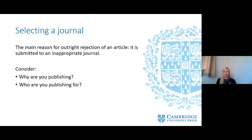First of all, selecting a journal. The top reason that editors give for an outright rejection of an article is that it is submitted to the wrong journal. Choosing the right journal for your research can seem daunting, but it doesn't need to be. By asking some simple questions, you can narrow your focus. When selecting a journal, it is important to consider who you want to publish for, why you want to publish, and who your audience is.